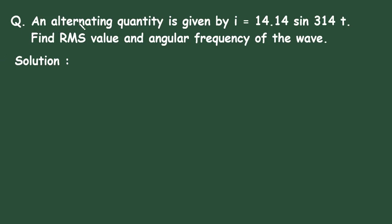Question: An alternating quantity is given by i equals 14.14 sin 314 t. Find RMS value and angular frequency of the wave.